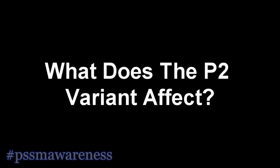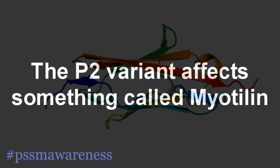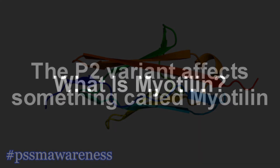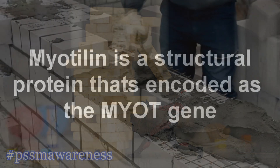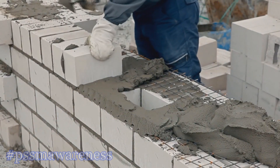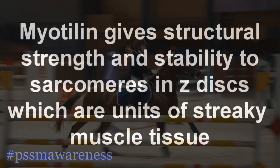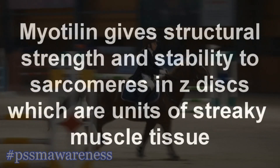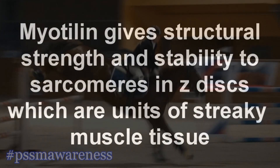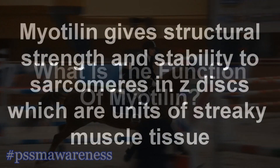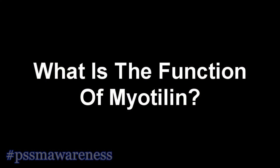What does the P2 variant affect? The P2 variant affects something called myotillin. Myotillin is a structural protein that's encoded as the MYOT gene. Think of it a bit like cement — it helps hold everything together. Myotillin gives structural strength and stability to sarcomeres in Z-discs, which are units of streaky muscle tissue.